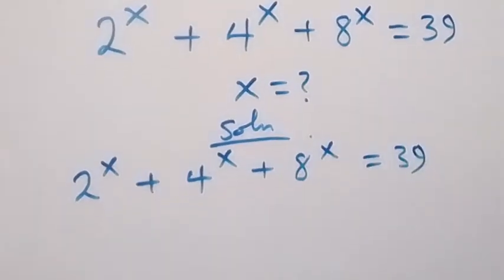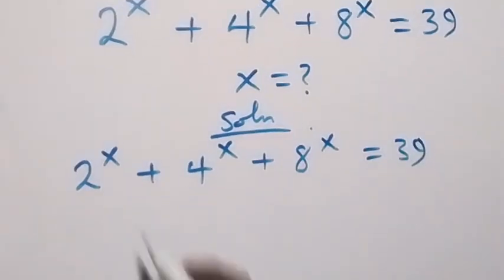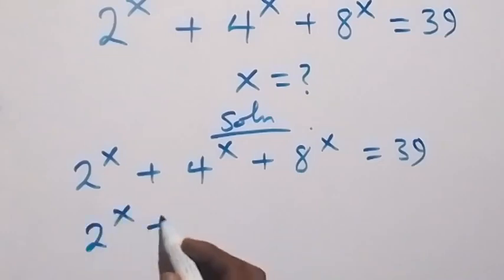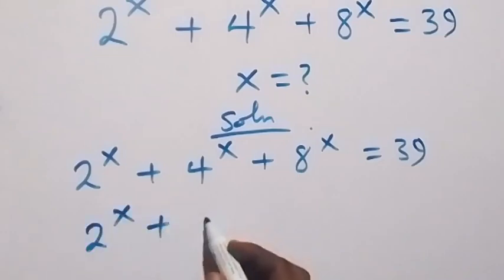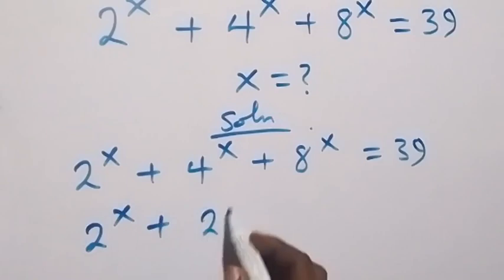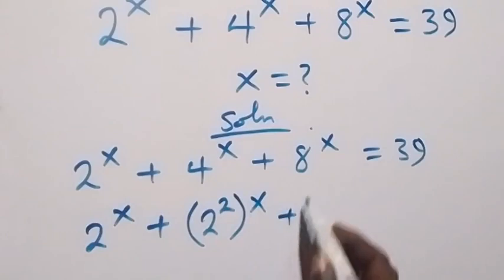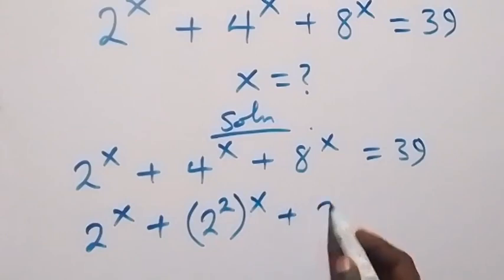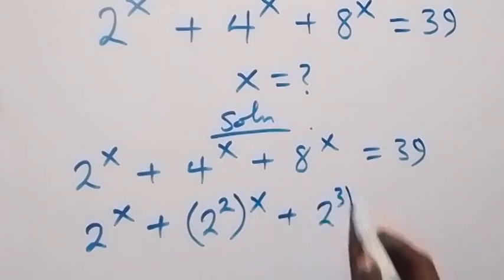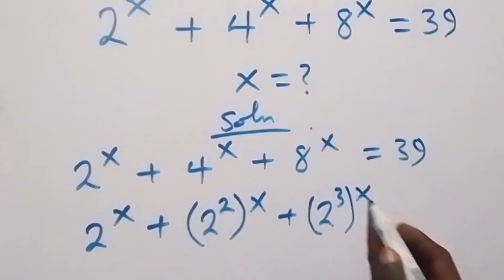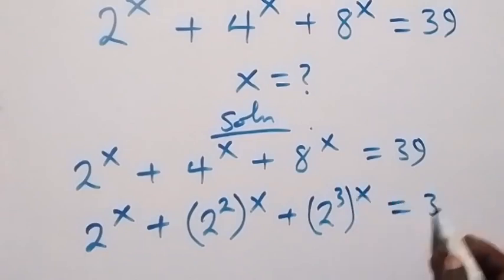From here, let's change everything to base 2. This is already in base 2, so we have 2 raised to the power x, plus 2 raised to the power 2 raised to the power x, then 2 raised to the power 3 raised to the power x, which equals 39.